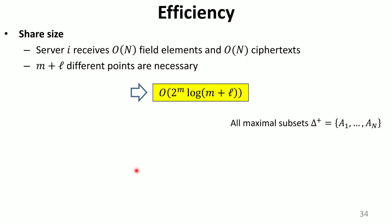As for efficiency, in our scheme, each server receives at most N field elements and at most N ciphertexts. Here, M is the number of maximal subsets of delta, which is exponential in the number of players in the worst case. On the other hand, to share secret vectors instead of scalars, we need to choose a finite field containing at least N plus L elements. Therefore, the share size of our scheme is 2^M times log of (N plus L).